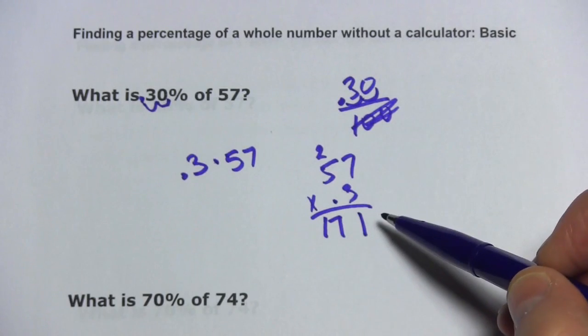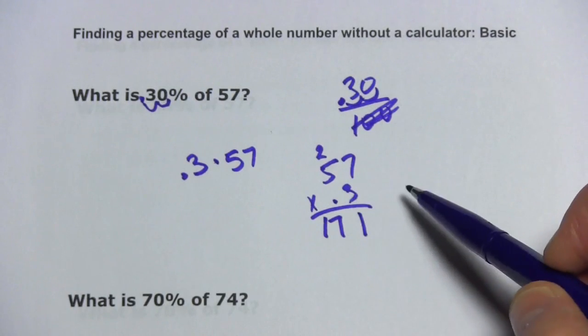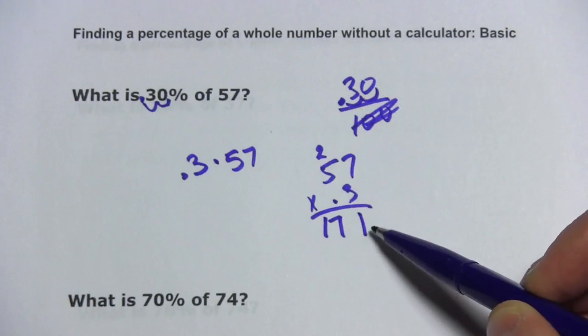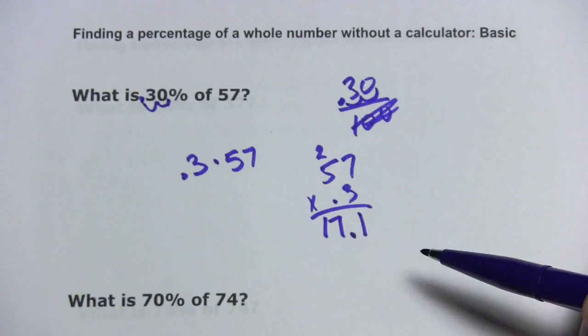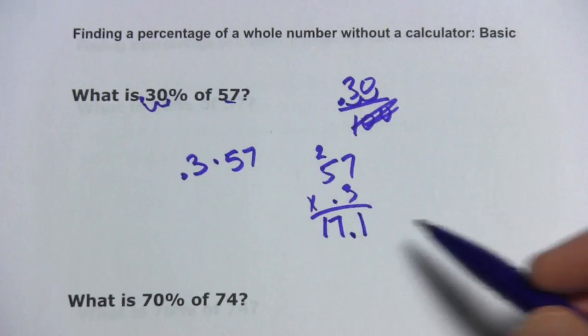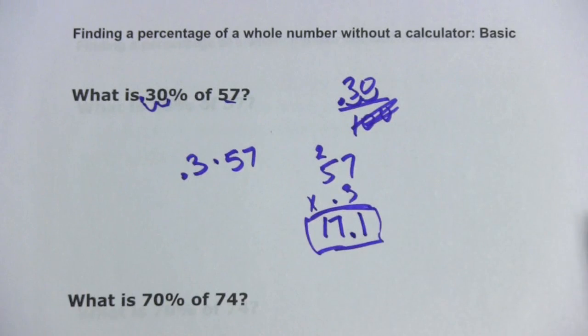And then, once you've got the numbers, you have to count the number of spaces behind the decimal place. So here, the 3 is behind the decimal. It's just 1, so I'm going to put one number behind the decimal there. So, 30% of 57 is 17.1.